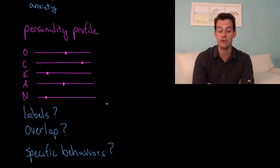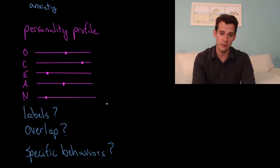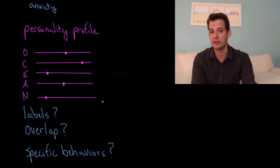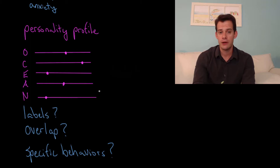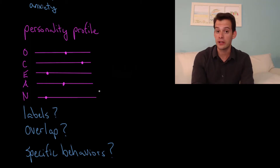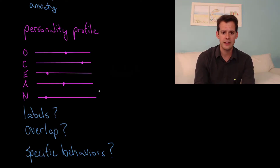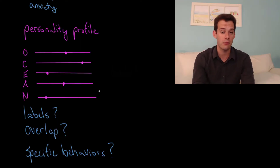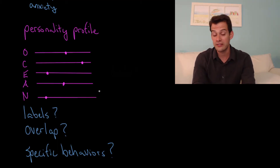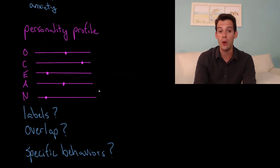There's also potential for overlap between scores on these different dimensions. Your score on one dimension might influence how you express another — for instance, your openness to experience might be influenced by your extroversion, or your openness to social experiences might differ from your openness to ideas. This also brings us to the idea that this is a general, nomothetic assessment — it's trying to find things shared by everyone, so scores on the NEO PI-R won't tell you about specific behaviors or the nuances of a single individual.